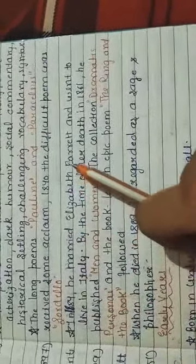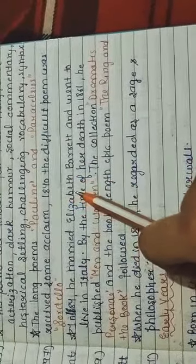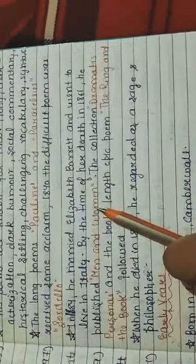His wife's name was Elizabeth Barrett Browning, who was also a very famous poet. After her death, he wrote Men and Women, Dramatis Personae, and The Ring and the Book.